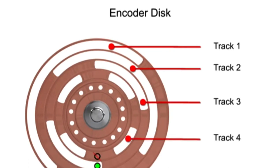Photo detectors assigned to each track designate the resolution of the encoder. The higher the number of concentric tracks, the higher the accuracy.